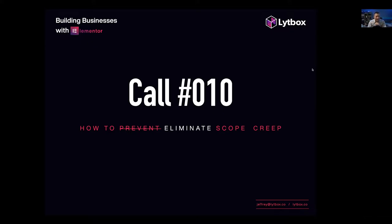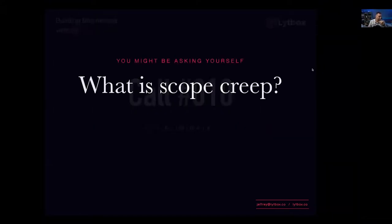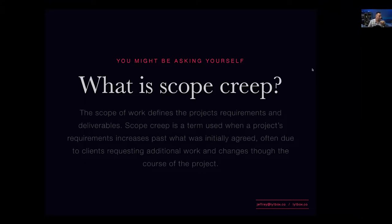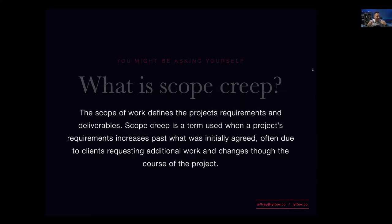This is call number 10 and we're going to talk about how to not only prevent scope creep but how to eliminate it. The scope of work, or SOW, defines the project requirements and deliverables. Scope creep is a term used when a project's requirements increase past what was initially agreed on, and it's often due to clients requesting additional work and changes throughout the course of the project.